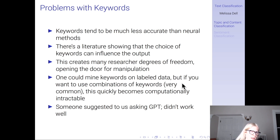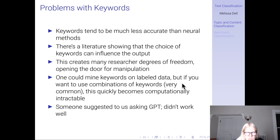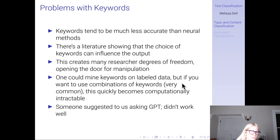One could mine keywords on labeled data — you label some data and then use that to directly mine keywords. But if you want to use combinations of keywords, which is very common, this very quickly becomes computationally intractable, because when you take combinations of things, you get an intractable number of combinations that you need to examine.